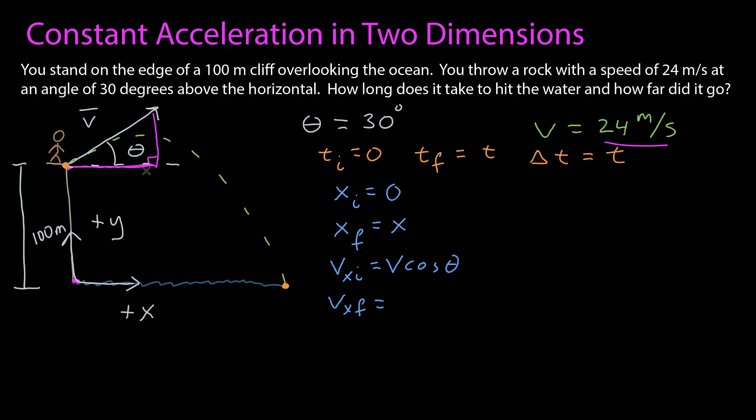And since the x component here is adjacent to my angle, the x component is going to be the magnitude times cosine theta. Do I know the final velocity? Well, not yet. However, I know that the x acceleration is zero. And since the x acceleration is zero, the final x component of the velocity has to equal the initial x component of the velocity.